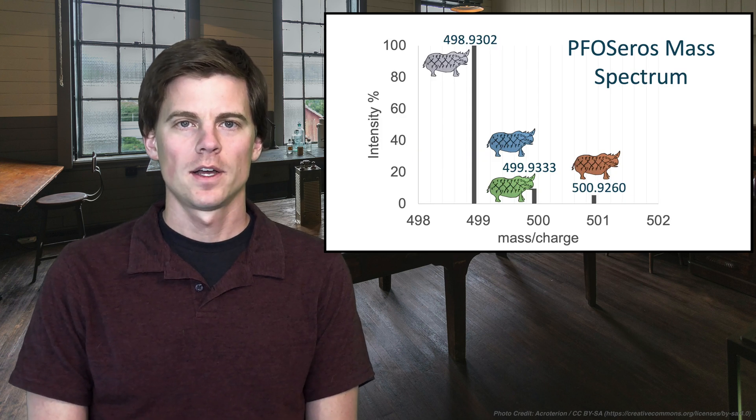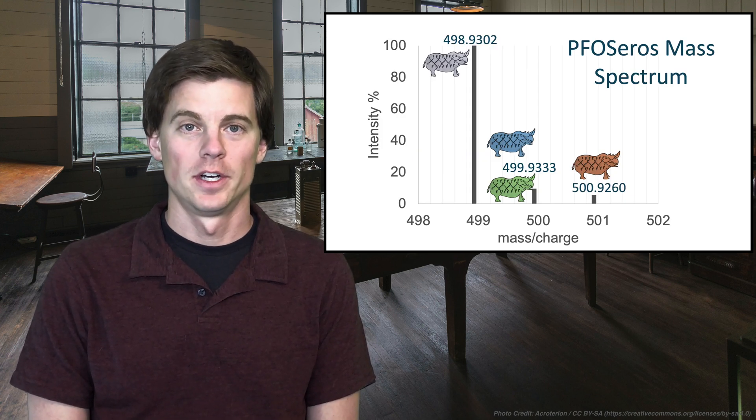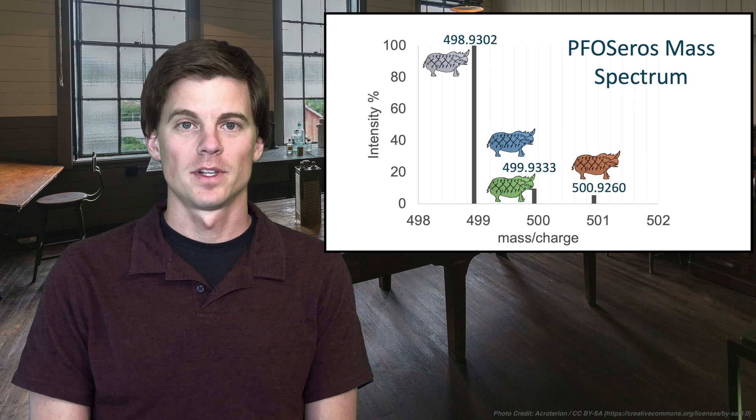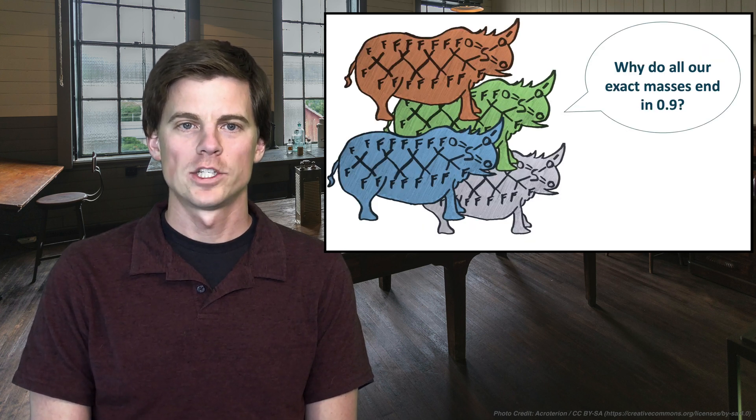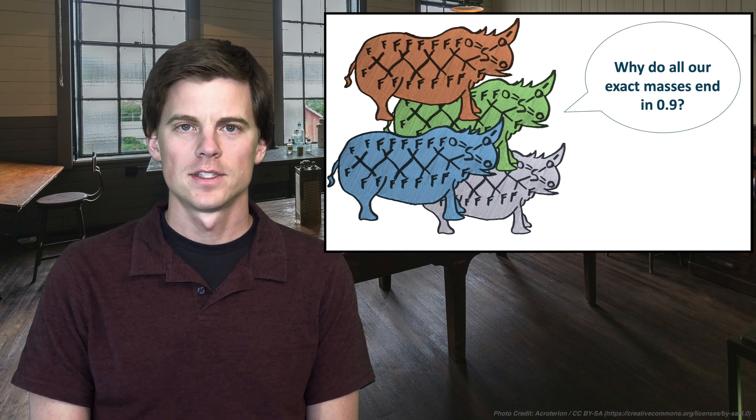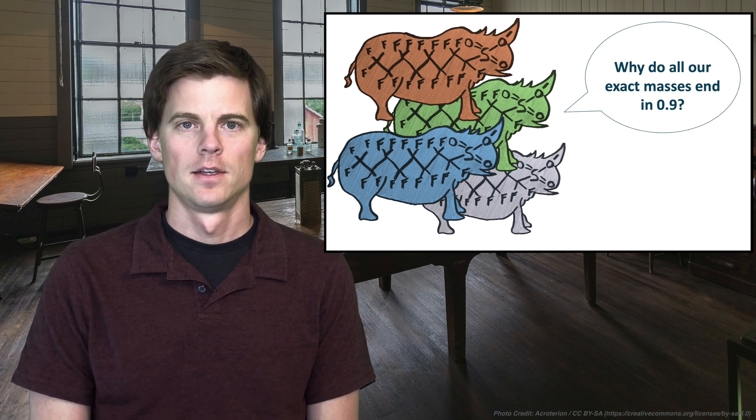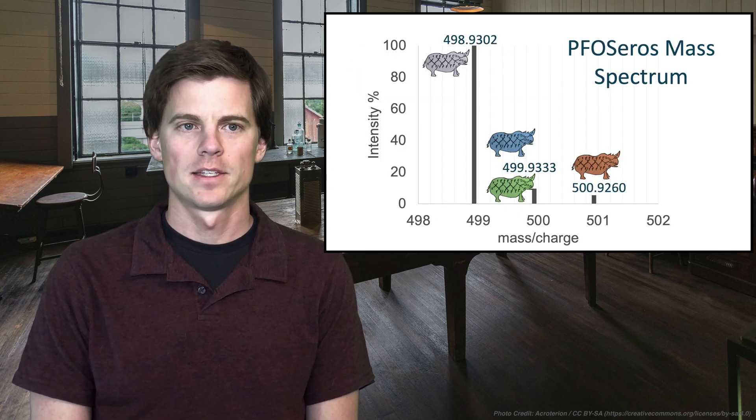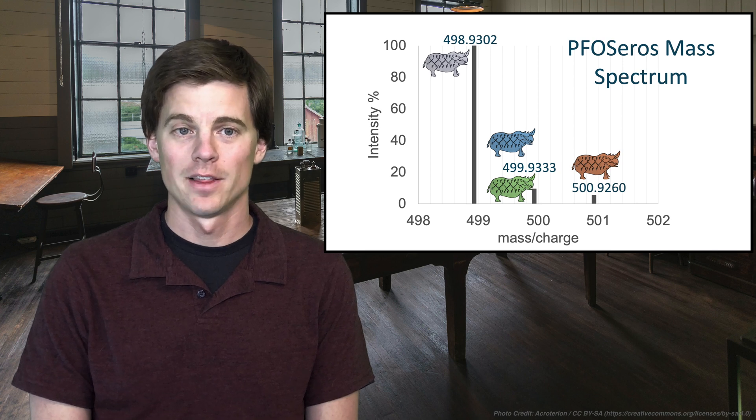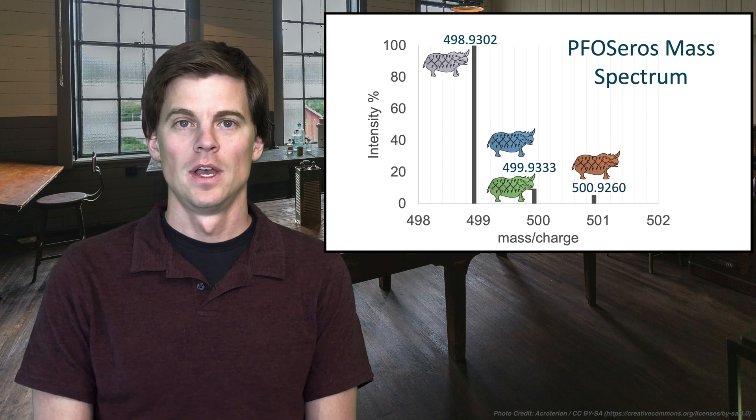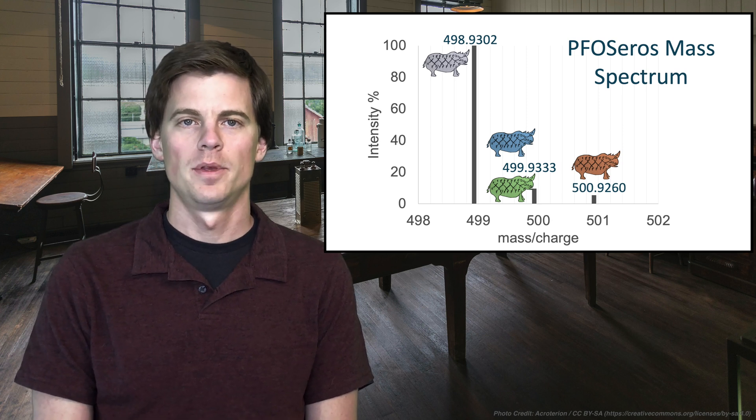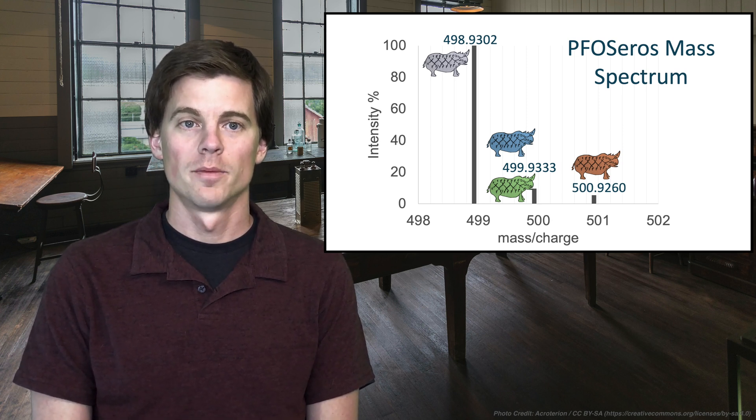We ended part one talking about mass spectrometry of PFAS, specifically PFOS, and we ended with a question of why do all their exact masses end in 0.9? So if we go back to this mass spectrum you see 498.93, 499.93, 500.92, and it's not just PFOS, it's other PFAS too. A lot of them end in 0.9.